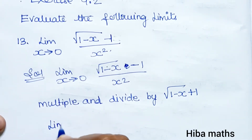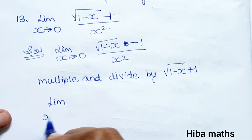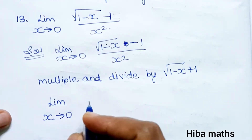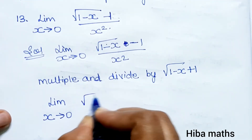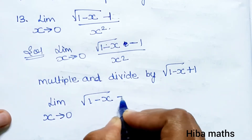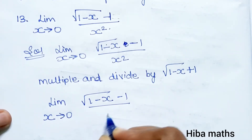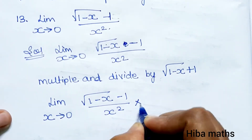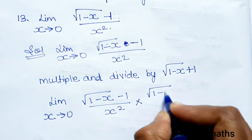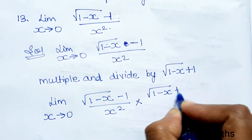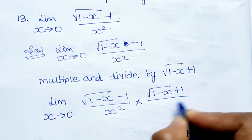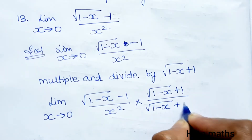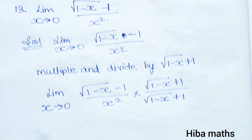Limit as x tends to 0: root of (1 minus x) minus 1, divided by x squared, multiplied by root of (1 minus x) plus 1, divided by root of (1 minus x) plus 1.